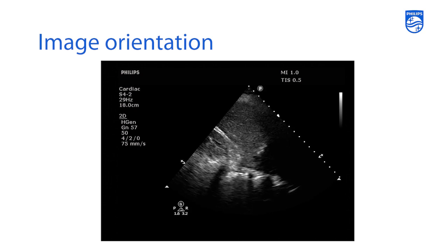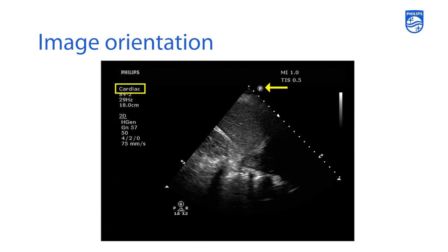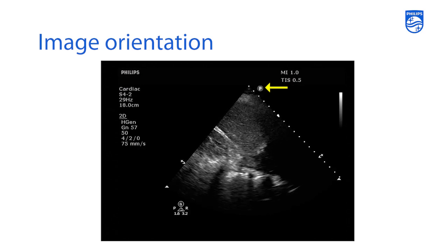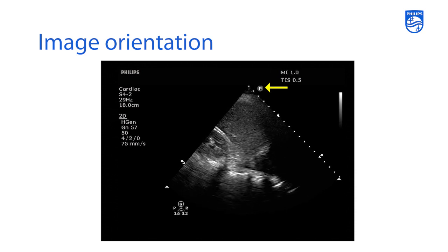One technical detail to note: the orientation marker is on the right-hand side of the screen in this image because the exam was started under a cardiac preset. In cardiac ultrasound, the orientation marker is always on the right-hand side of the screen. In every other ultrasound evaluation — whether lung, abdominal, or vascular preset — the orientation marker moves to the left-hand side of the screen. This is the classic difference between cardiac imaging acquisition and other imaging in ultrasound.